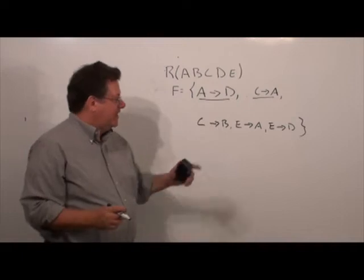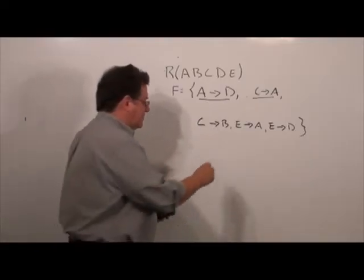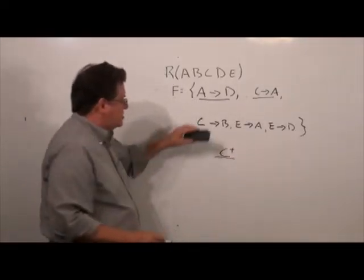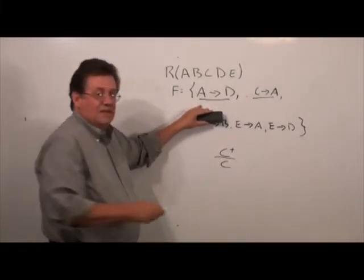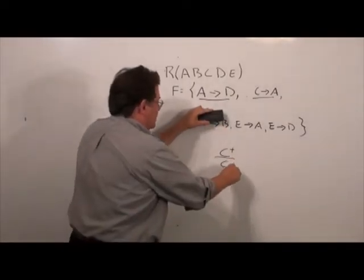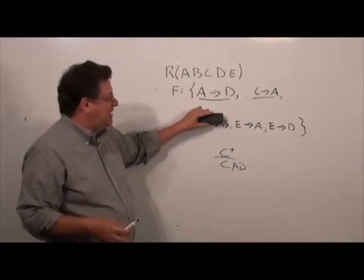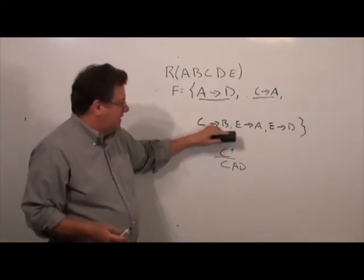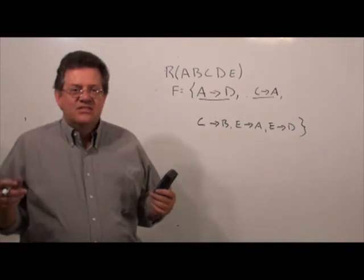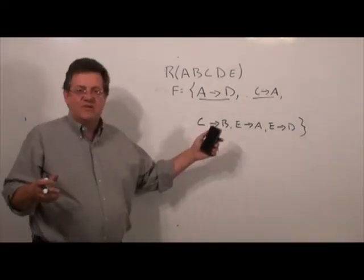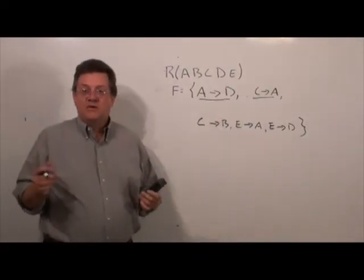Next we check C → B. We compute C closure: by reflexivity C, then C → A gives A, and A → D gives D. So C closure is {C, A, D} — we did not get B. Therefore we need to keep C → B. As a helpful trick: since B only appears on the right-hand side of C → B and nowhere else as a determinant, there was no way to functionally determine B without it.